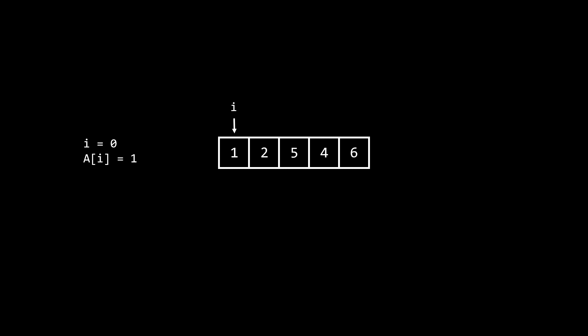So if we start with i on the first position, we see a positive one, then we're going to flag the index one as visited. Now i is on the second element, and that element is a two, so we flag the second index as visited. Next we encounter the five, so we should be able to flag the five. But although we have five elements, our index stops at four. So if we try to flag the fifth index, we're going to get an error. This problem is inherent to the fact that indexes in arrays start with zero, not one.